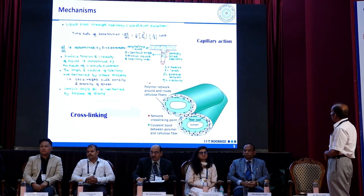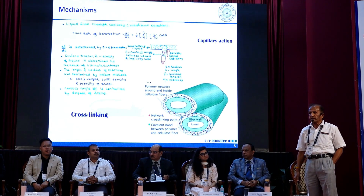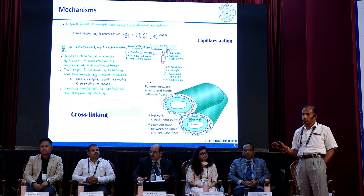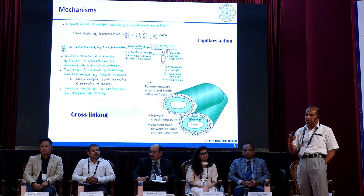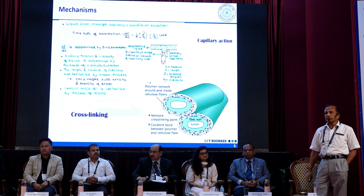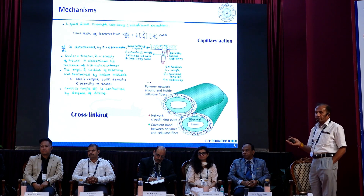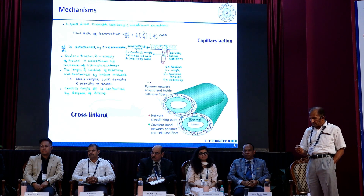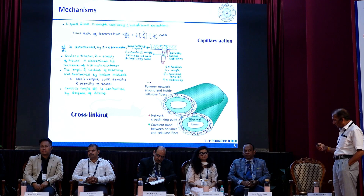The amount of penetration of liquid through the paper will depend upon the porosity, and this porosity may be reduced by the refining or beating process. But at the same time, if we apply a hydrophobic compound on the surface of the paper by increasing the contact angle, the penetration of liquid can be decreased. Also, because cellulose fibers are hydrophilic in nature, if we are able to develop cross-linking or by adding wet strength resin, then we can reduce the penetration of water.